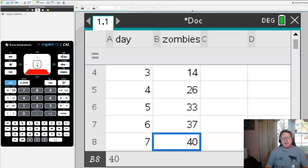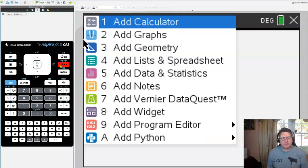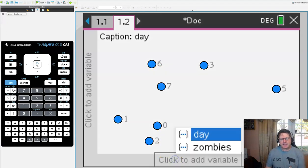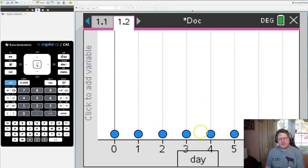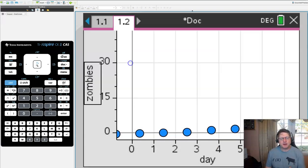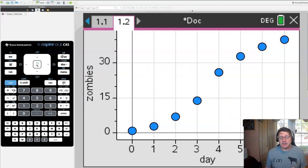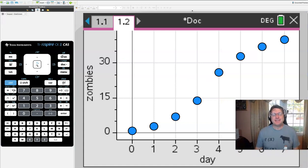What we're going to do with this data is we're going to graph this. The best way to do that is to add a page on the Inspire that would be a data and statistics page. I can choose my axis names: for the x-axis I'm going to call that our time or day, and then for our y-axis that will be our zombies. We have this sort of graph that shows a quick increase that subtly transitions into a slower increase.